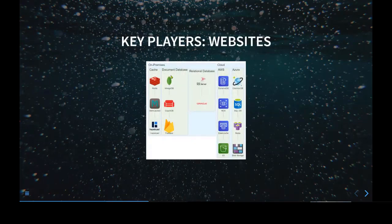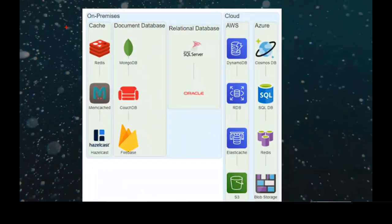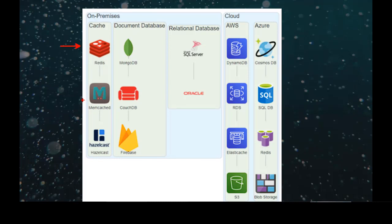On-premises, in the world of caching, Redis is king — though don't use Redis persistent cache. Memcached is another player, and Hazelcast is a third. We still have our document databases and relational databases — Postgres, MySQL, MariaDB.